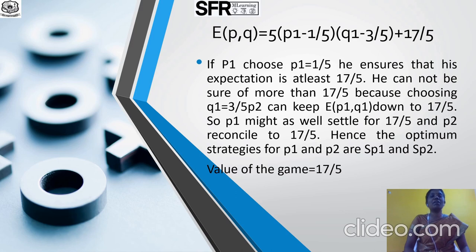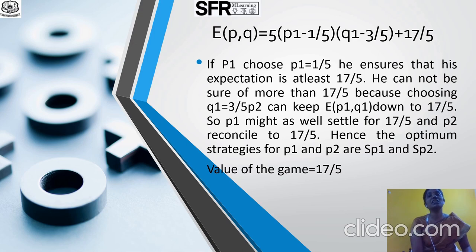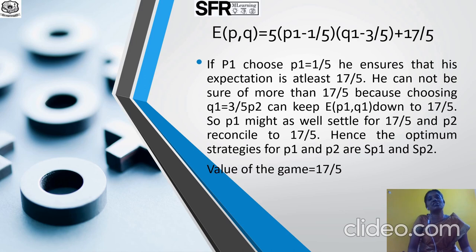Hence, the optimum strategy for P1 and P2 are SP1 and SP2, and the value of the game is 17/5. We have covered games with saddle points and without saddle points, and seen problems under both cases. In the next class, we will discuss the expected payoff function using graphical representation. Thank you.